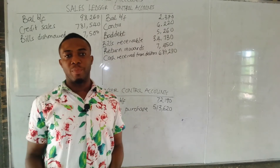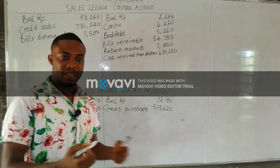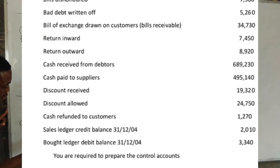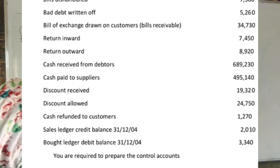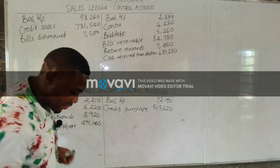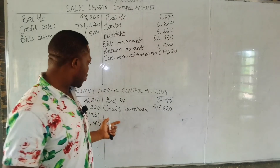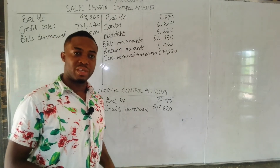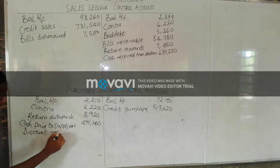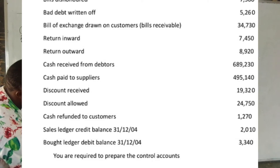Next is cash paid to supplier — posted to the debit side of the purchase ledger because the supplier receives the money, and what is received is debited. The amount is $195,140. Then discount received: this is a discount received from the supplier, so it is also debited to the purchase ledger. The amount is $19,320.